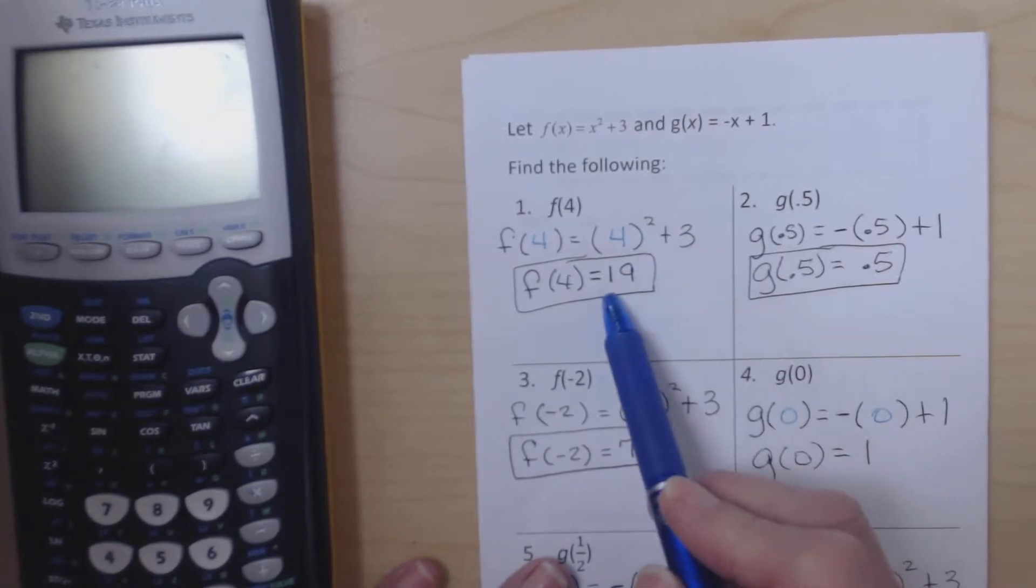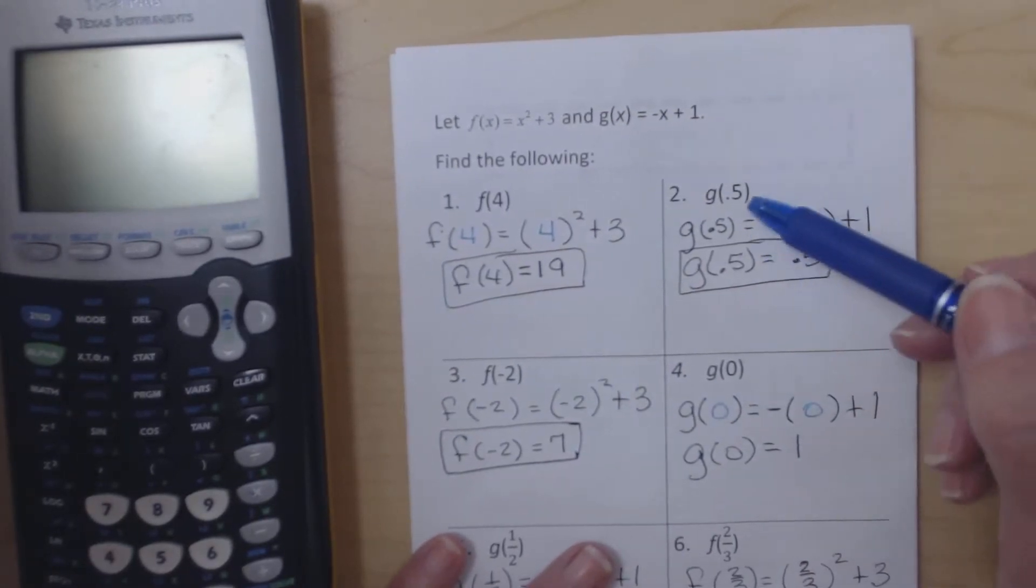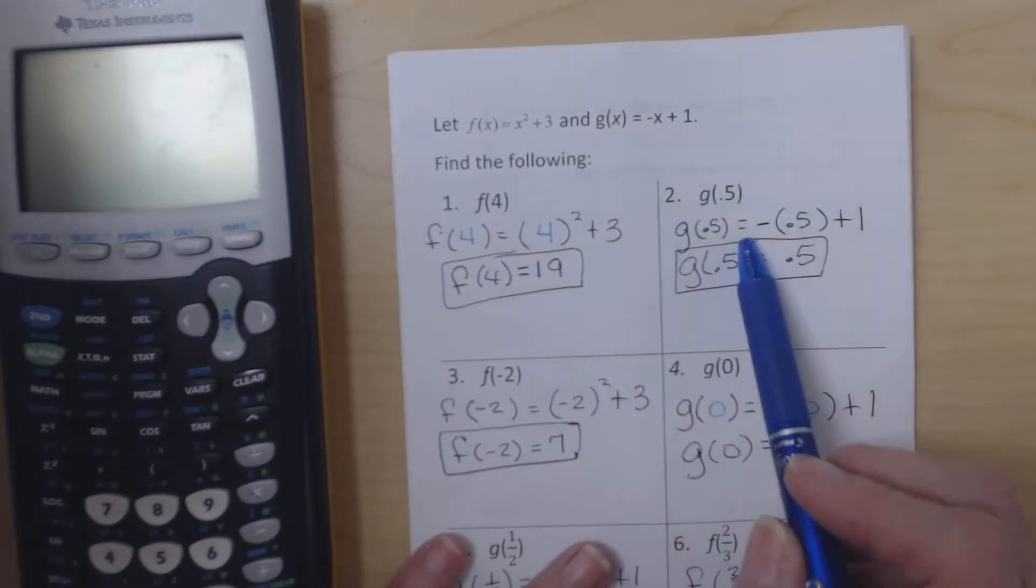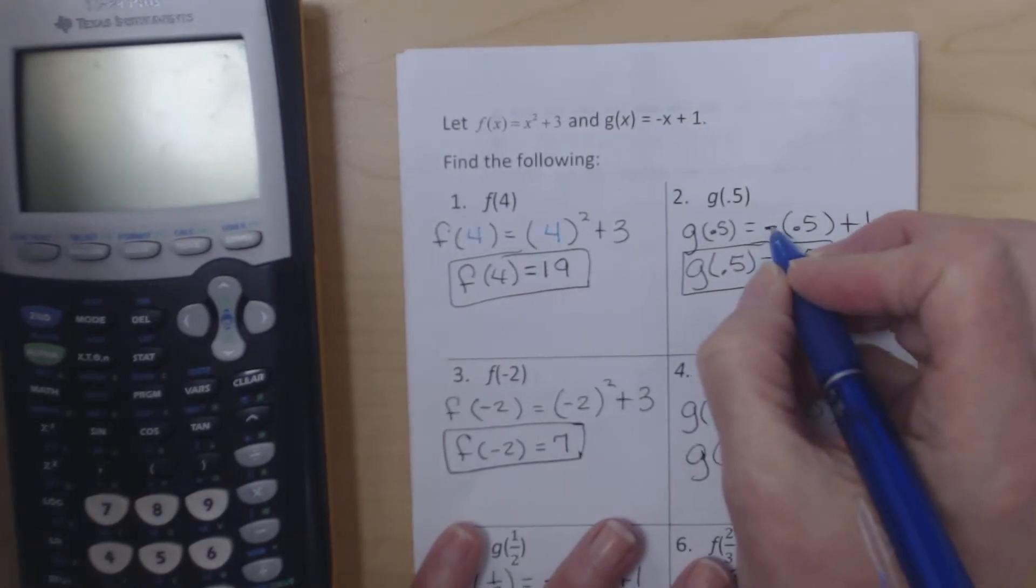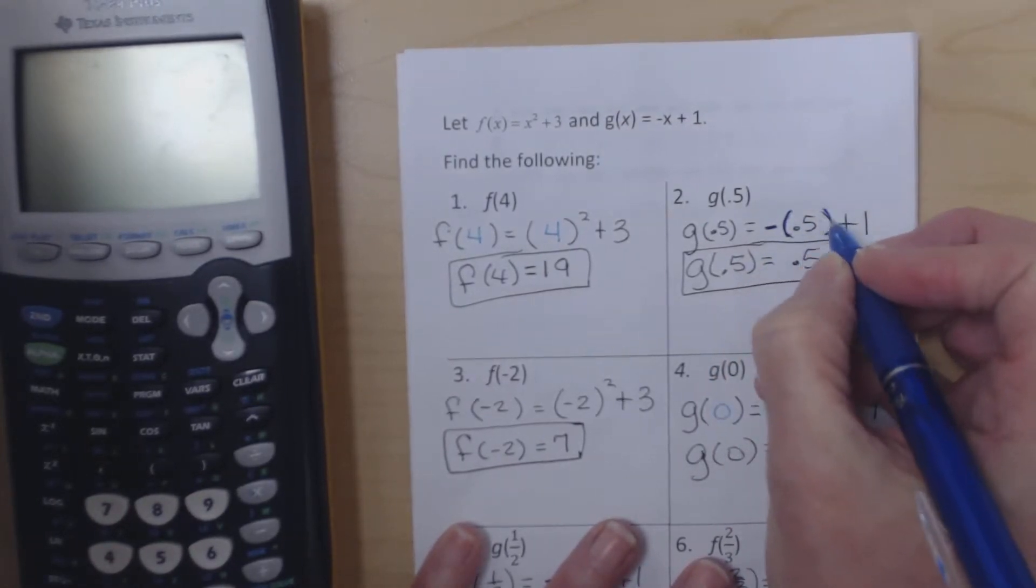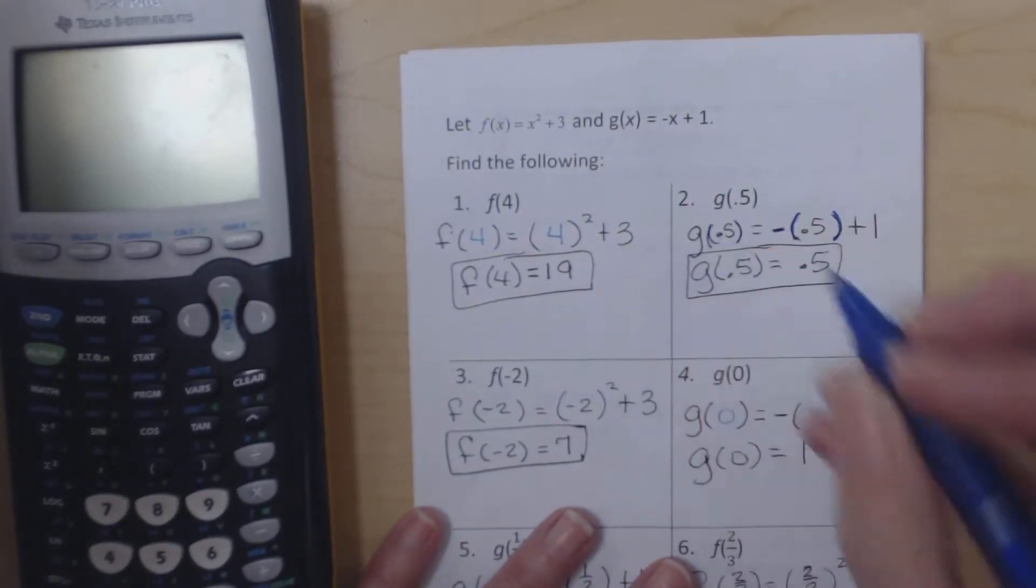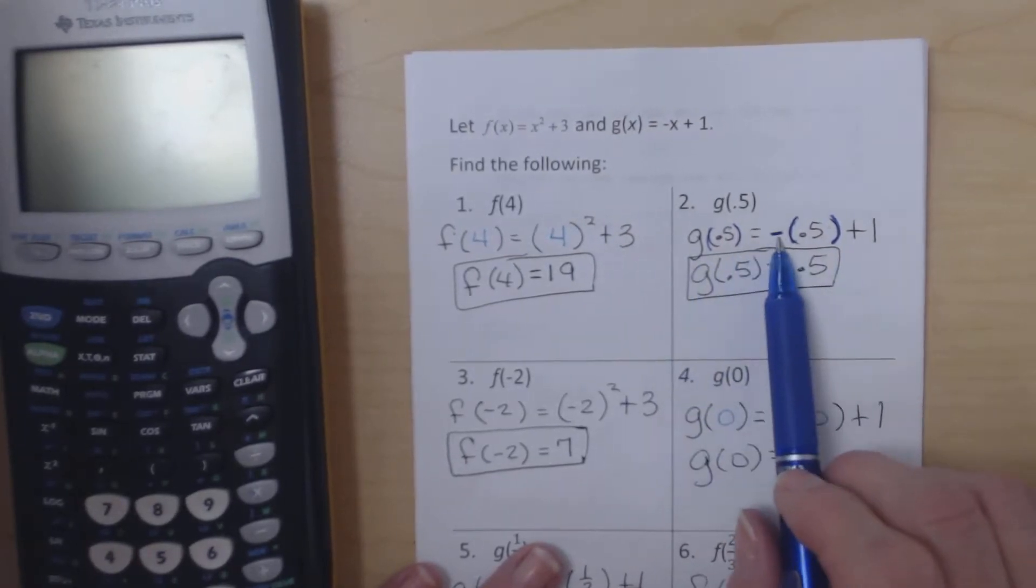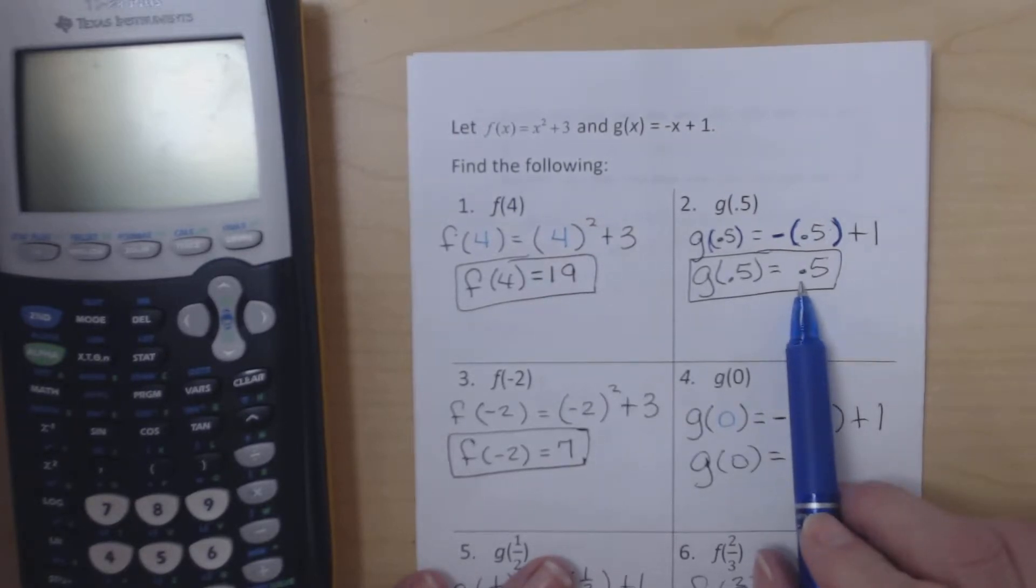4 squared plus 3 is 19, so f(4) equals 19. For number 2, we're looking at the function g. The g(x) function is -x plus 1. The negative sign stays outside the parentheses because the parentheses is just replacing the actual x. And then inside we put the 0.5 in each place. Then we do -0.5 plus 1, and we get positive 0.5.